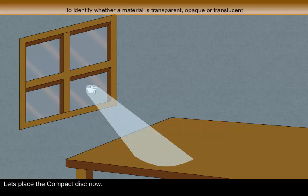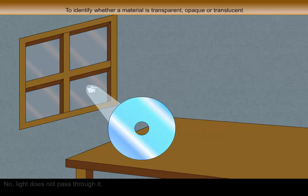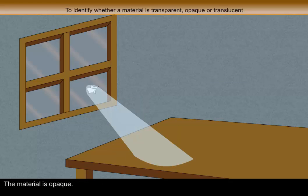Let's place the compact disc now. No, light does not pass through it. So the material is opaque.